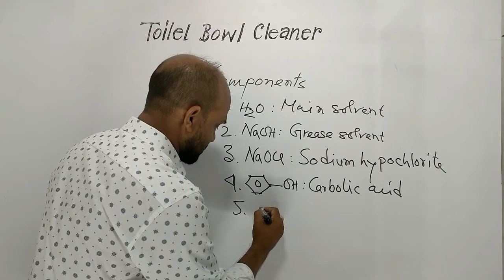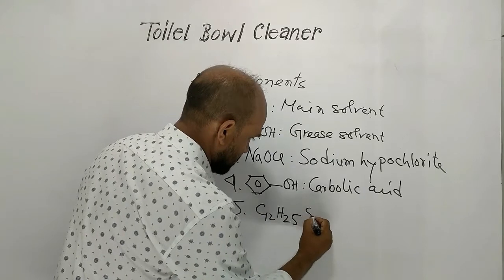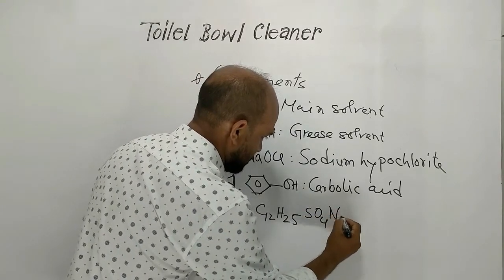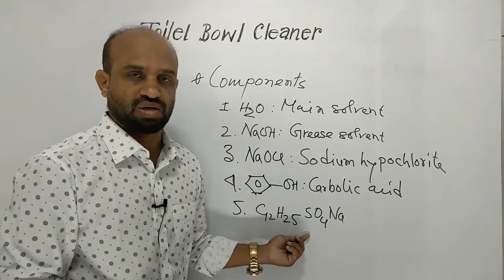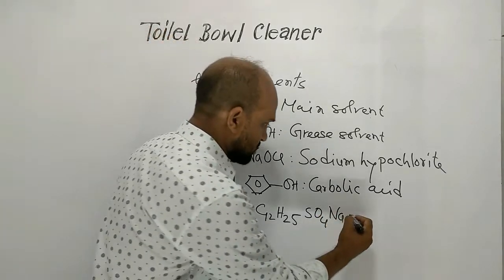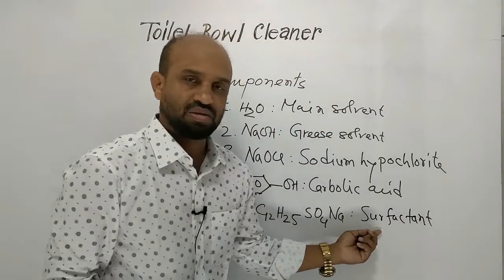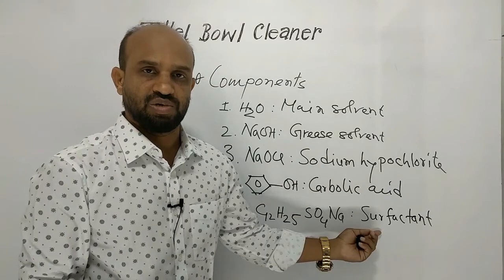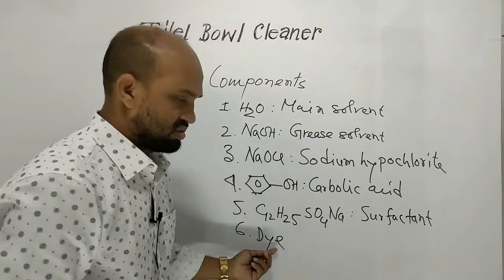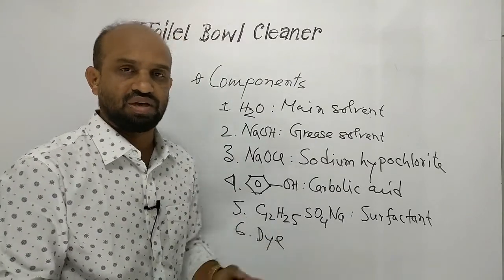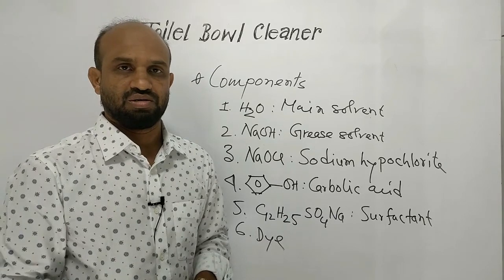Number five: sodium lauryl sulfate, with formula C12H25SO4Na. It is a kind of detergent used as a surfactant, meaning a surface active material. Number six: dye, which is used as a dyeing agent in toilet bowl cleaner.